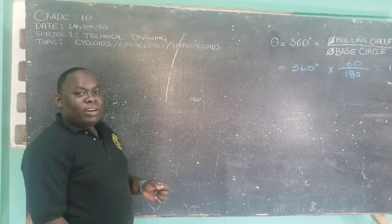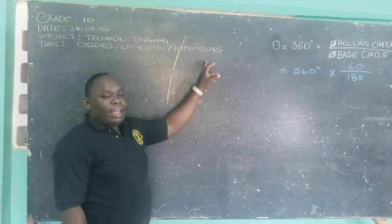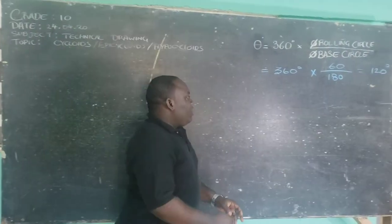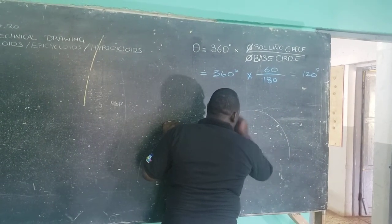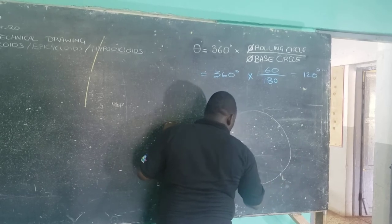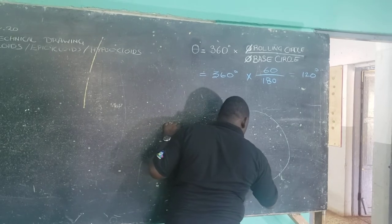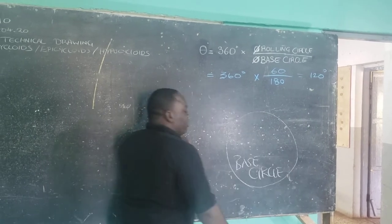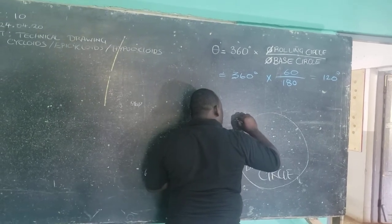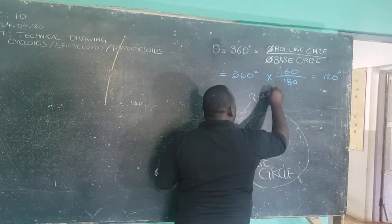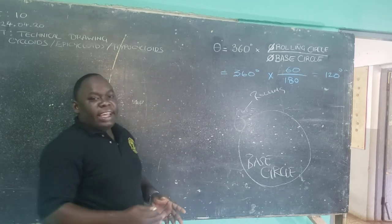Welcome to our technical joint class. Today we're going to be going through our epicycloid and our hypocycloid. Now there are a few things for you to know. What is an epicycloid? We think about two things: this is going to be referred to as our base circle, and then we're going to have what is called our rolling circle.